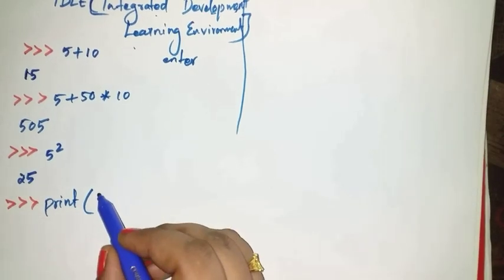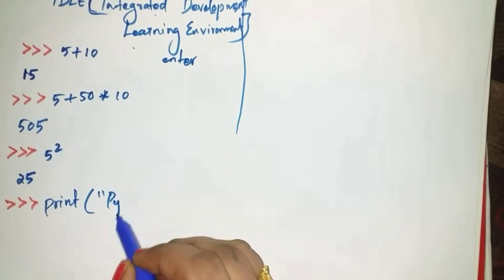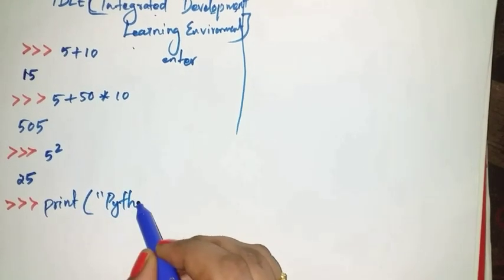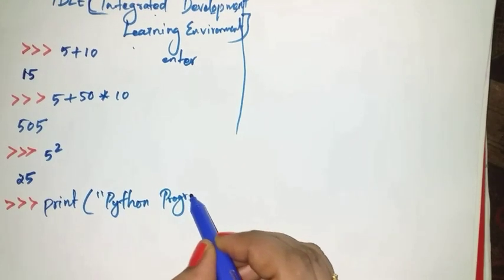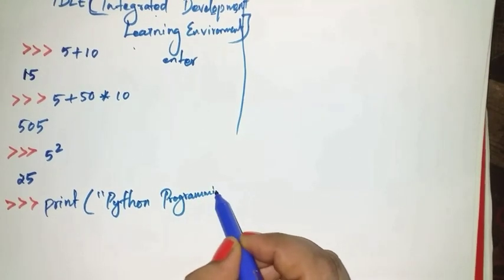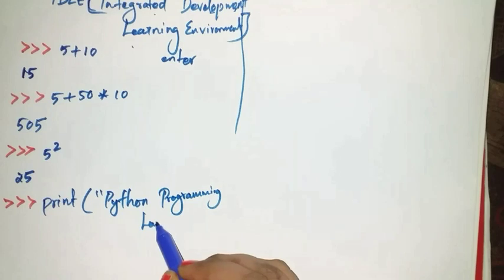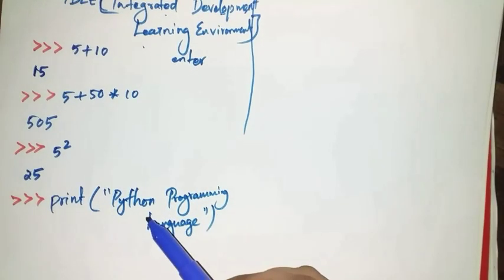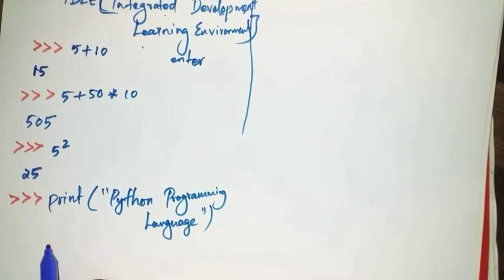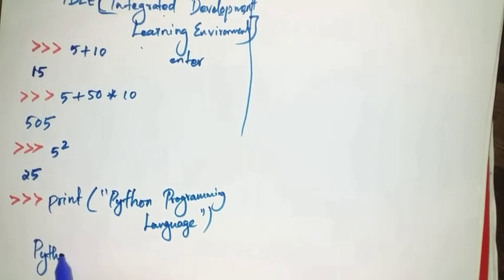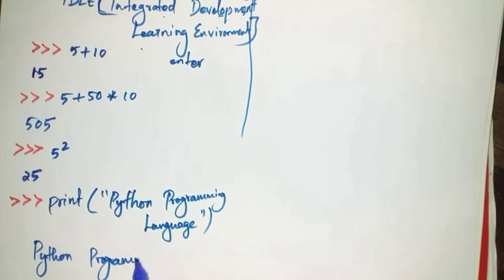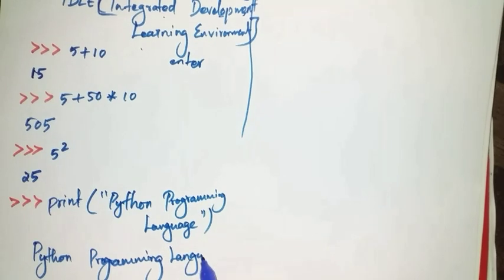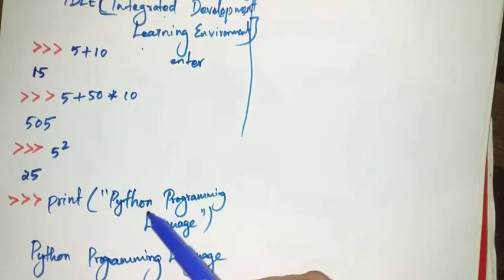For example, to print the statement 'Python Programming Language', you write: print('Python Programming Language'). When you give this statement, you will get the output 'Python Programming Language' printed on the screen.